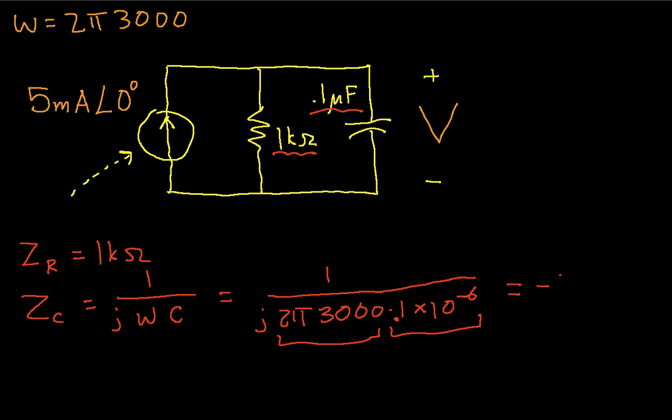we get minus j 530 ohms. So we can replace this resistance by the impedance minus j 530 ohms. That gives us our impedances. We're done with step two.